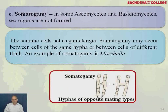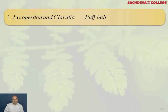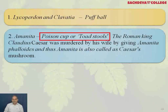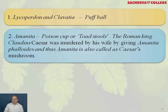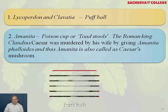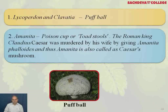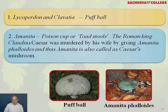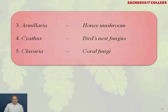Lycopernon and Clavaria are referred to as puffball. Amanita is known as poison cup or toadstool. The Roman king Claudius Caesar was murdered by his wife by giving him Amanita phalloides, and thus Amanita is also called Caesar's mushroom. Armillaria is honey mushroom, Cyathus is bird nest fungus, and Clavaria is coral fungi.